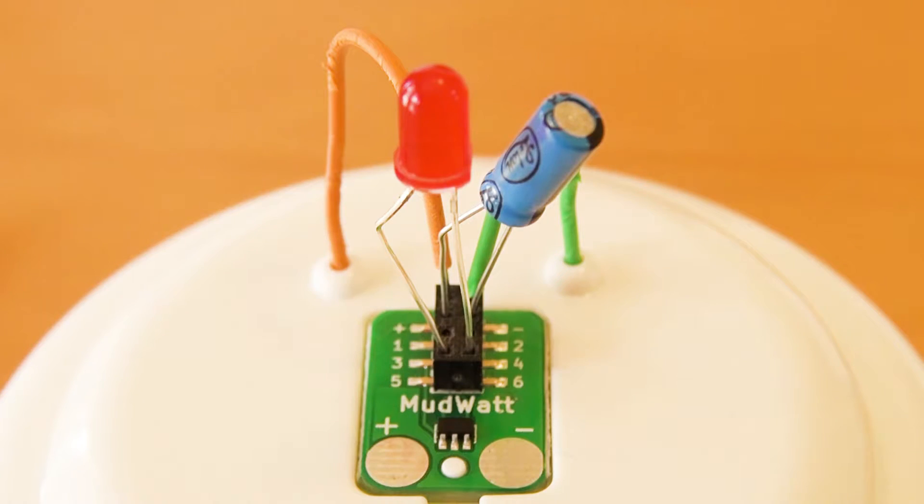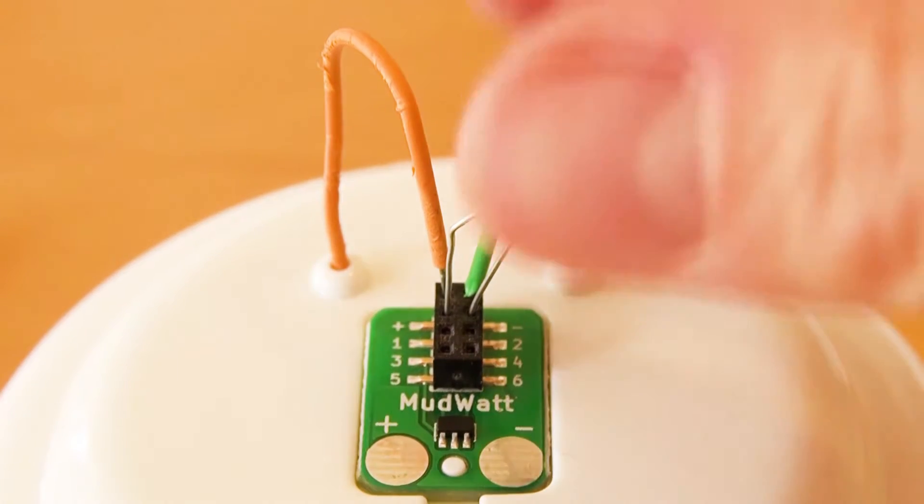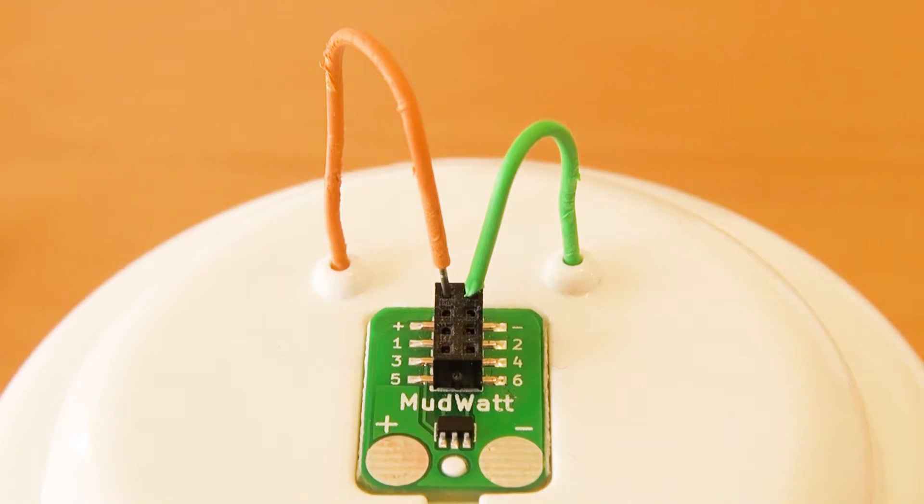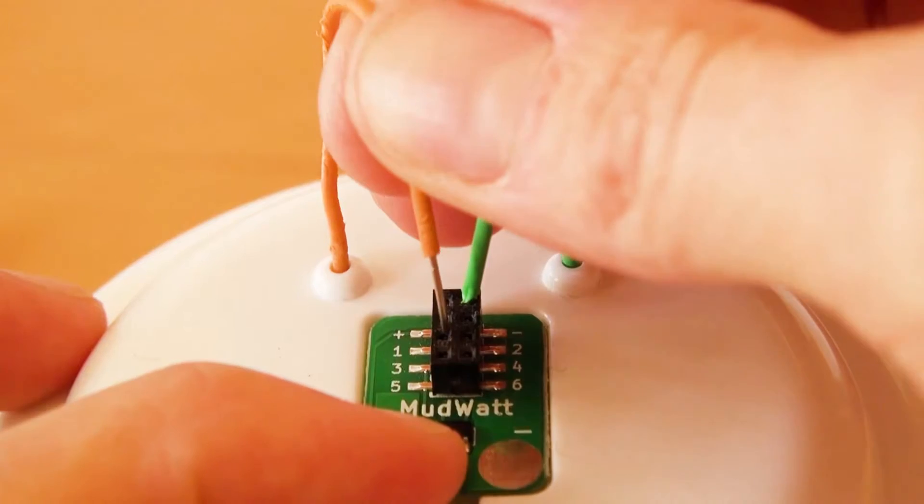To measure the power output of your microbial fuel cell, first remove the red LED and the blue capacitor from the hacker board. Then, switch the orange wire from the plus pin into pin number 3.